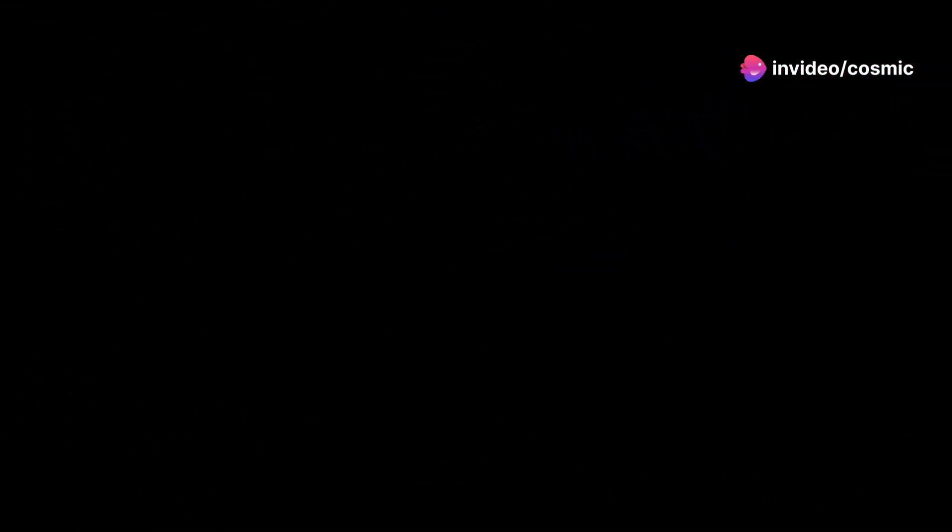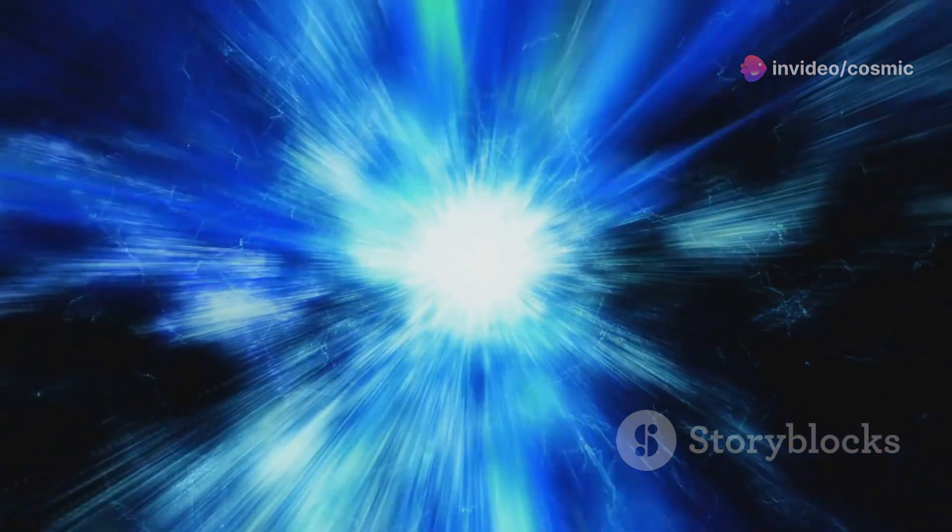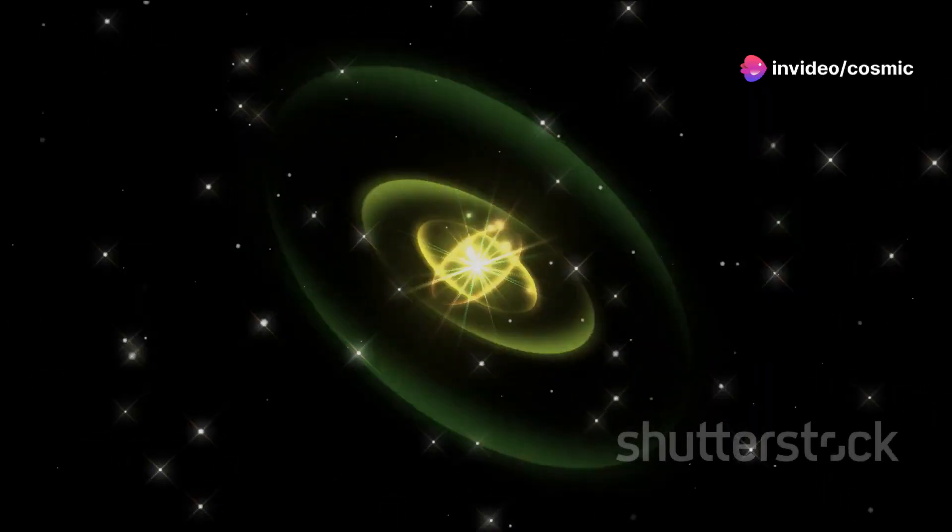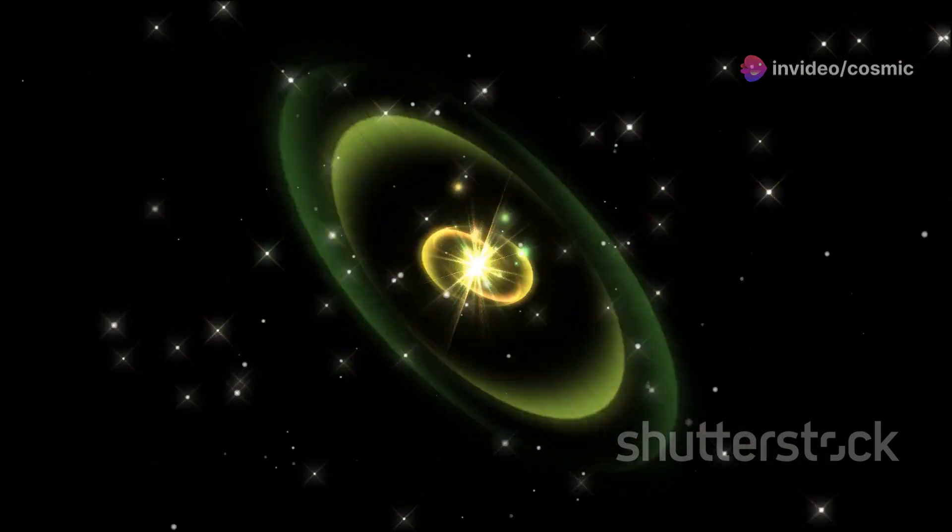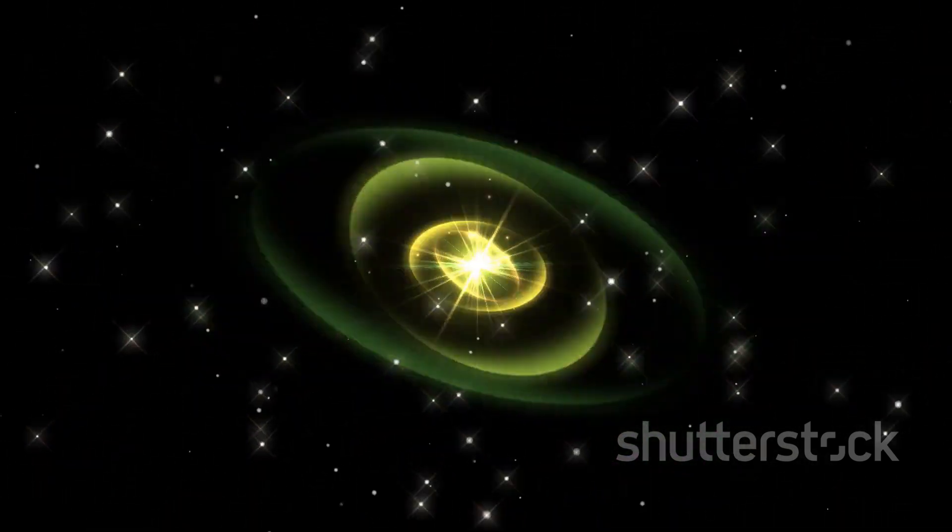Pulsars are the remnants of massive stars that have exploded as supernovae, leaving behind a dense core known as a neutron star. Imagine a star much larger than our sun, collapsing under its own gravity. This process is both violent and awe-inspiring, resulting in a dramatic transformation. The core of the star collapses to form an incredibly dense object called a neutron star. This is essentially the heart of what remains after the supernova explosion. This process crams more mass than our sun into a sphere with a diameter of just a few miles, creating an object of unimaginable density and compactness.